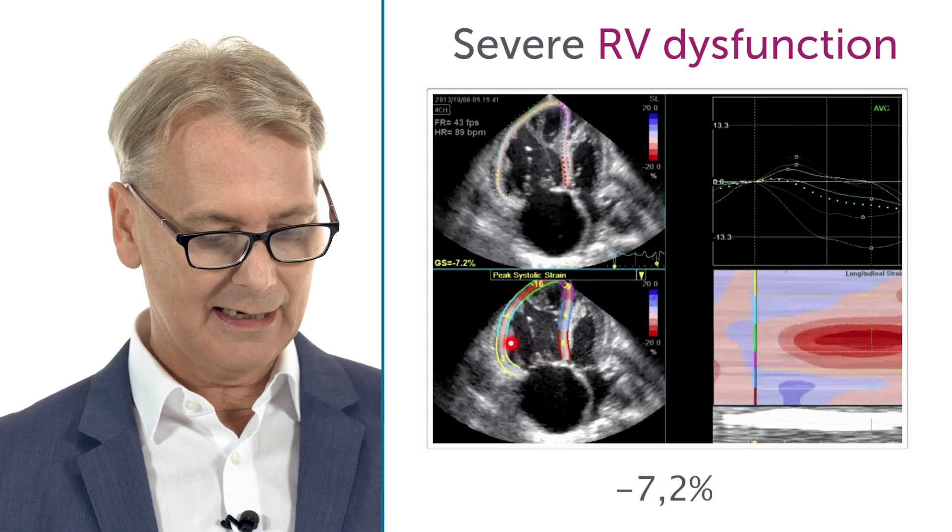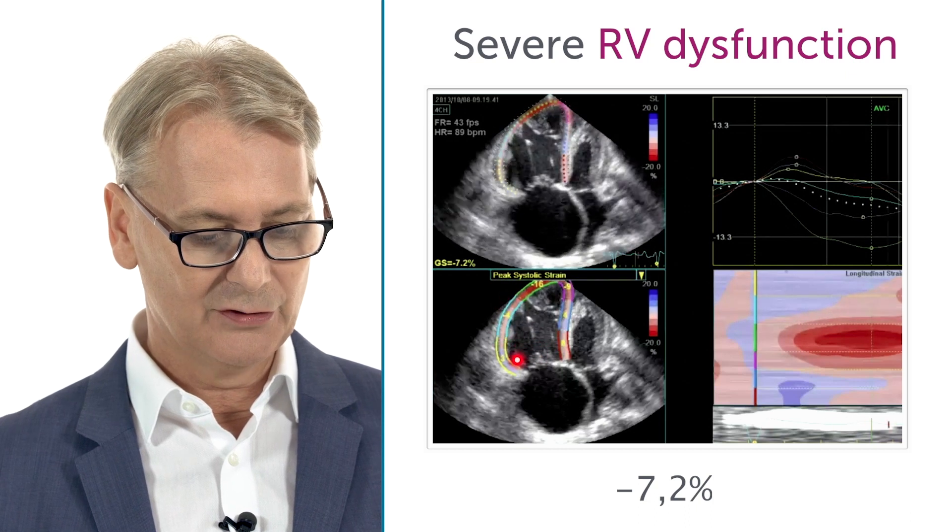We also see that it's the basal segments which are specifically reduced in longitudinal function. If you have the capabilities to perform strain on your machine, then I would do it. This is, at least in our laboratory, the method I use most frequently in addition to the visual assessment of right ventricle function, the S wave, and the TDI. It's a parameter with a bright future that will help us tremendously in the assessment of right ventricle function.